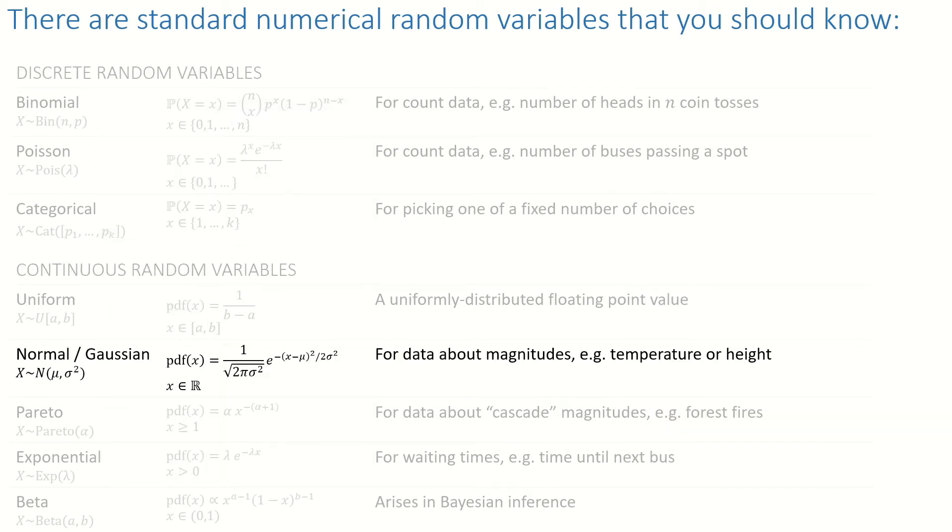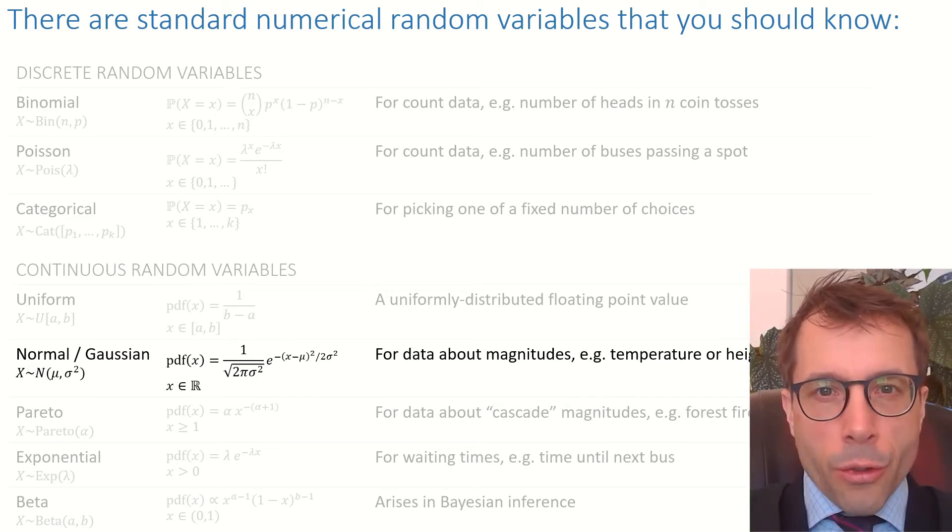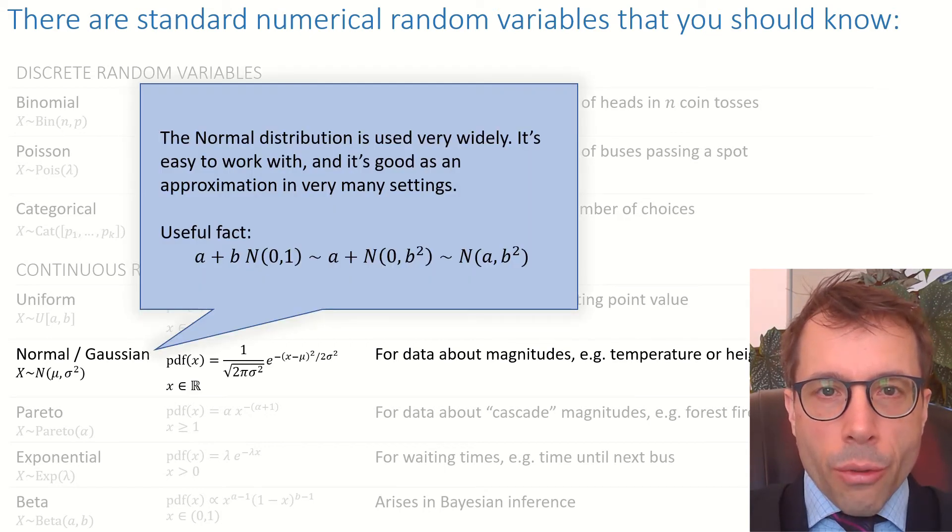Next, there's one random variable that deserves very special mention: the Gaussian random variable, also called the Normal. We use this one all the time in machine learning and data science. It's easy to work with, and it's often a surprisingly good approximation when we can't be bothered to work with a true distribution. Here's a very useful fact about normals: